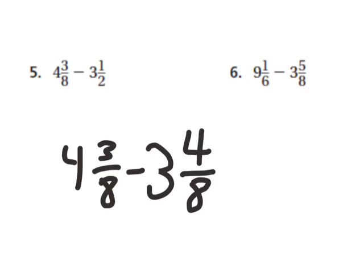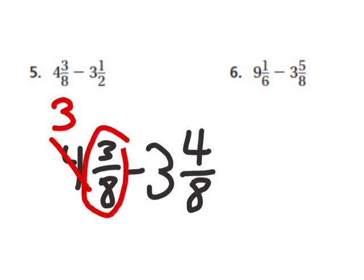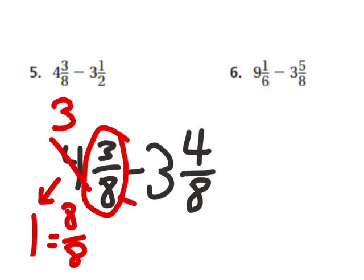I'm going to show you the concept behind borrowing in this situation. It'll look a little complicated, but I want to explain what's going on before I show you the shortcut, which is really fast. I can't take four from three, so I borrow from this whole number and this becomes a three. I subtracted one from that four, and I'm going to add that one whole to the three eighths. The only way I can do that is by changing that one whole into a fraction that has the same denominator as this fraction.